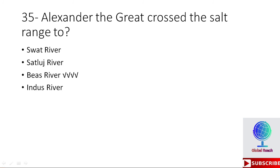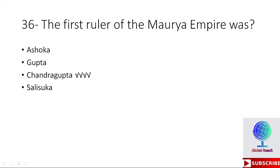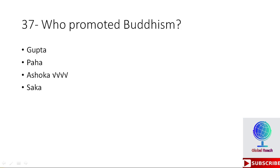MCQ 35: Alexander the Great crossed the Salt Range to which river? The right option is Beas River. Alexander crossed from the Salt Range to the Beas River. MCQ 36: The first ruler of the Maurya Empire was — Ashoka, Gupta, Chandragupta, or Salisuka? The right option is Chandragupta. MCQ 37: Who promoted Buddhism — Gupta, Pala, Ashoka, or Saka? The right option is Ashoka. Ashoka promoted Buddhism.